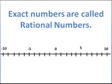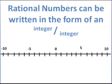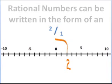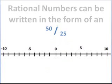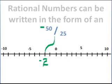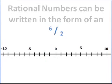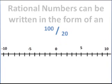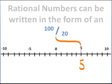Exact numbers are called rational numbers, and they fit the form of an integer over an integer. Here we have 1 over 2 — that's an integer over an integer, and it falls about there on the number line, 1 half. But 2 over 1 is also an integer over an integer, and that's just another fancy way of writing the number 2, and it falls there on the number line. 50 over 25 is just a fancy way of writing the number 2 as well, and it falls there. Negative 50 over 25 is just negative 2. 6 over 2 is just 3. 100 over 20 is the same thing as 10 over 2, and that's just 5.